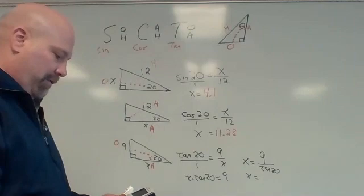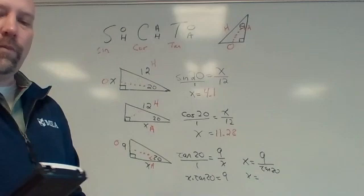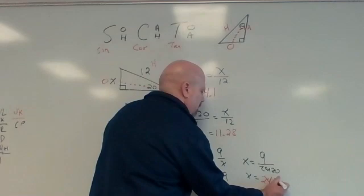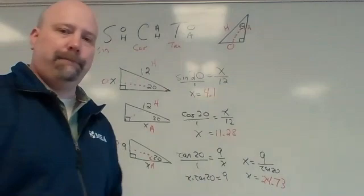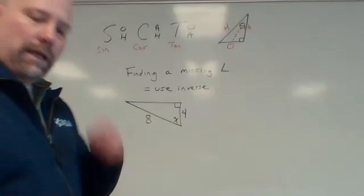And then I take that into my calculator. Now, I'm going to be careful. Do I do it correctly? Nine divided by tangent 20. 24.727. I'm going to round up to 24.73. And so those are examples of sine, cosine, and tangent.